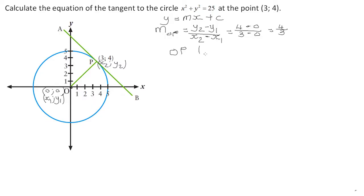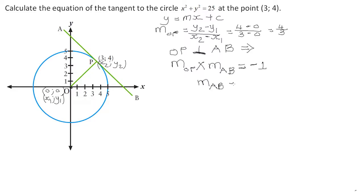The radius OP is perpendicular to the tangent AB. This implies that the product of their gradients equals negative 1: M_OP × M_AB = −1. Therefore, the gradient of the tangent M_AB = −1 / M_OP = −1 / (4/3) = −3/4.